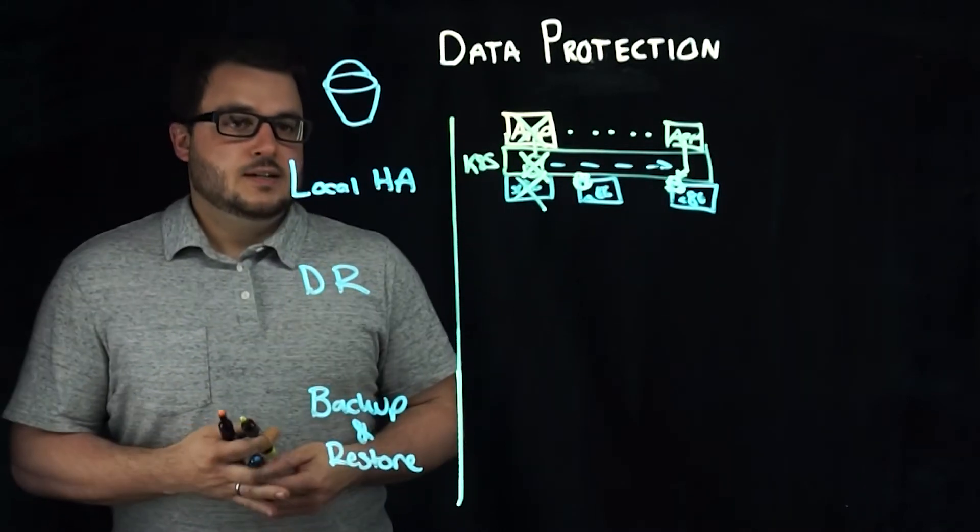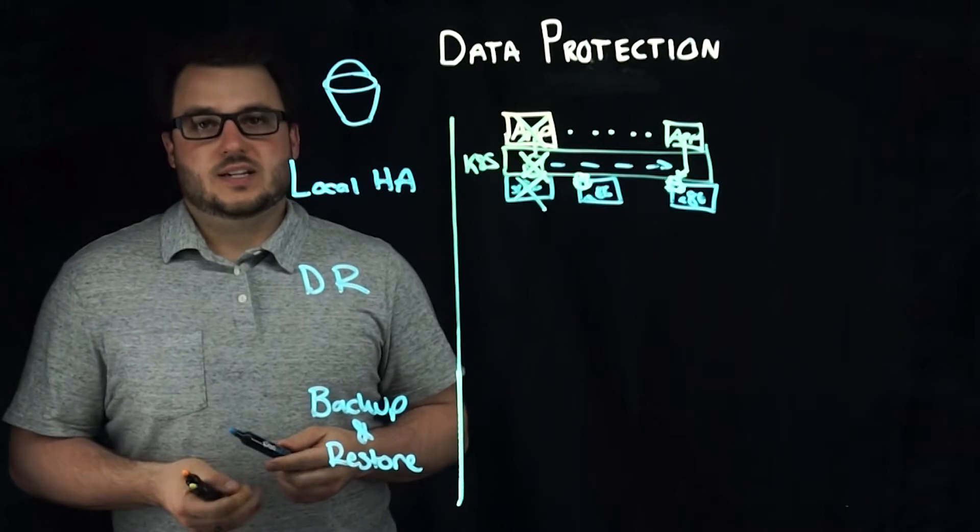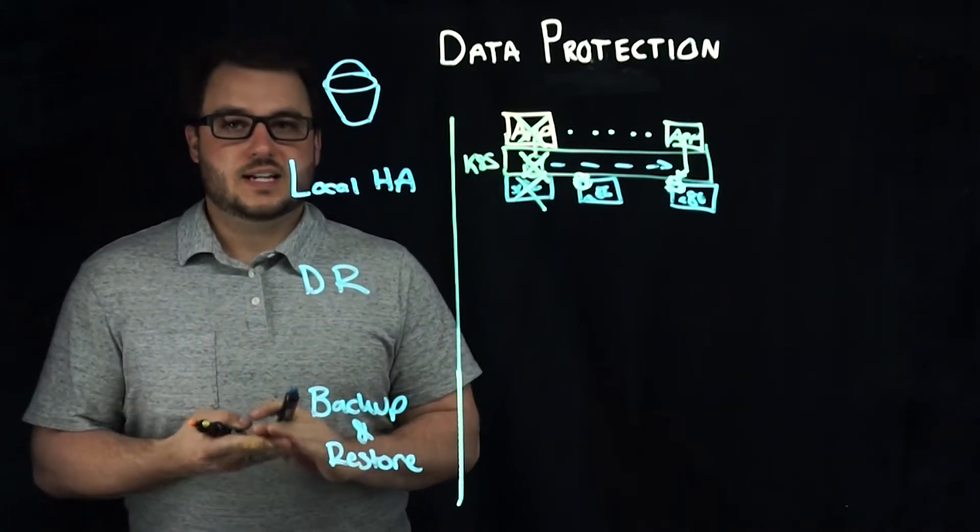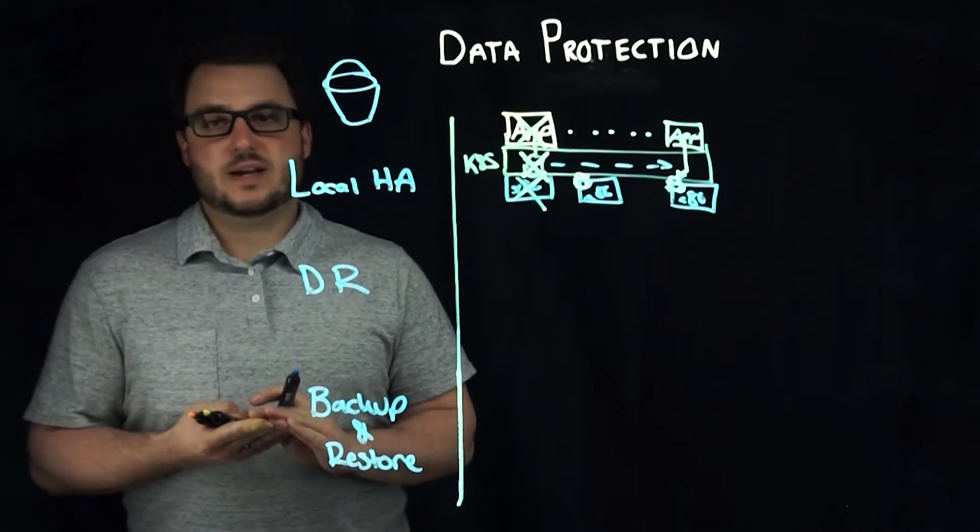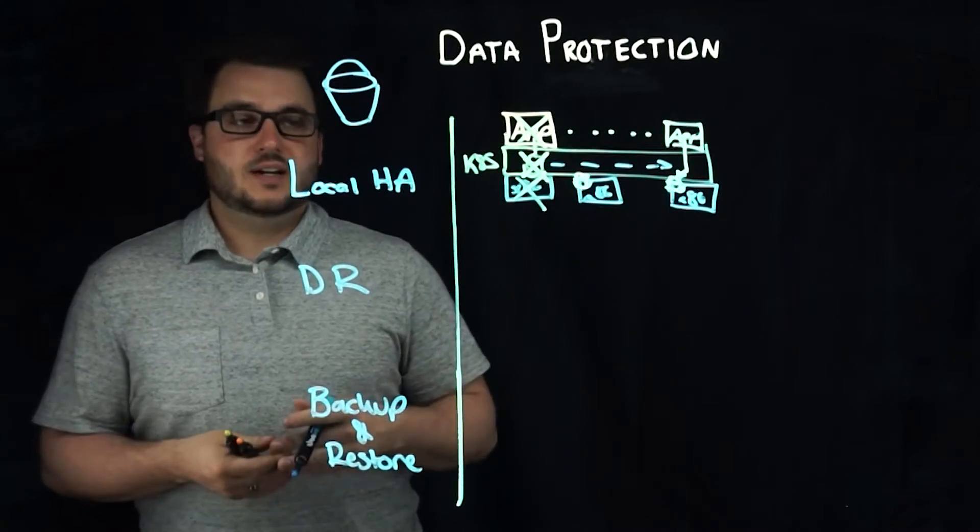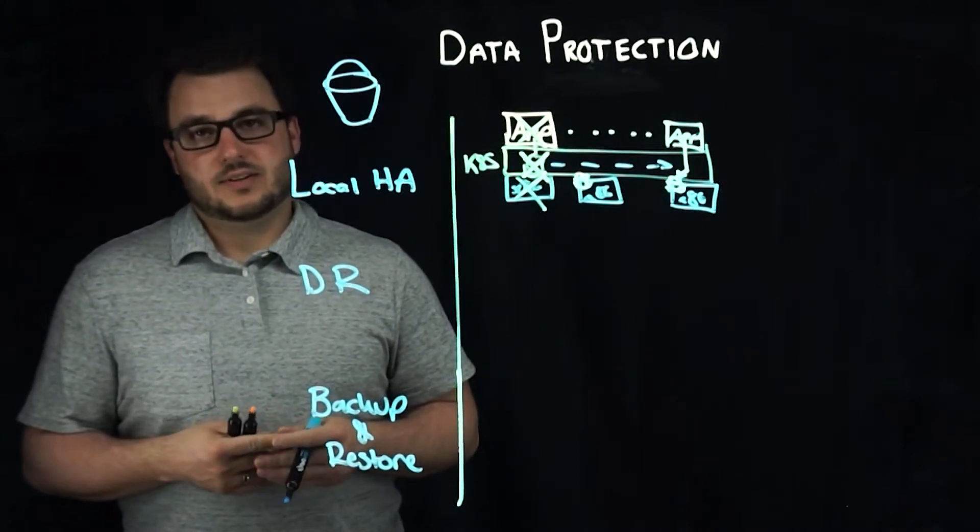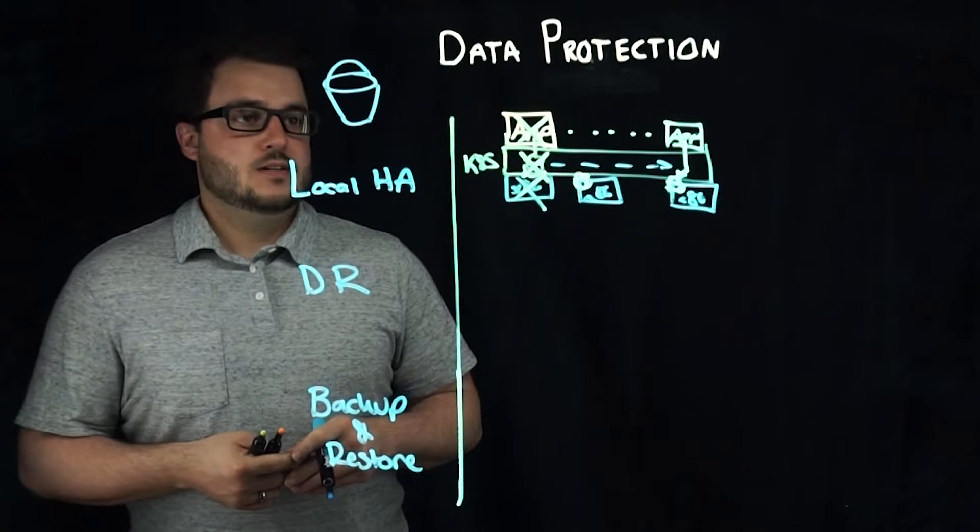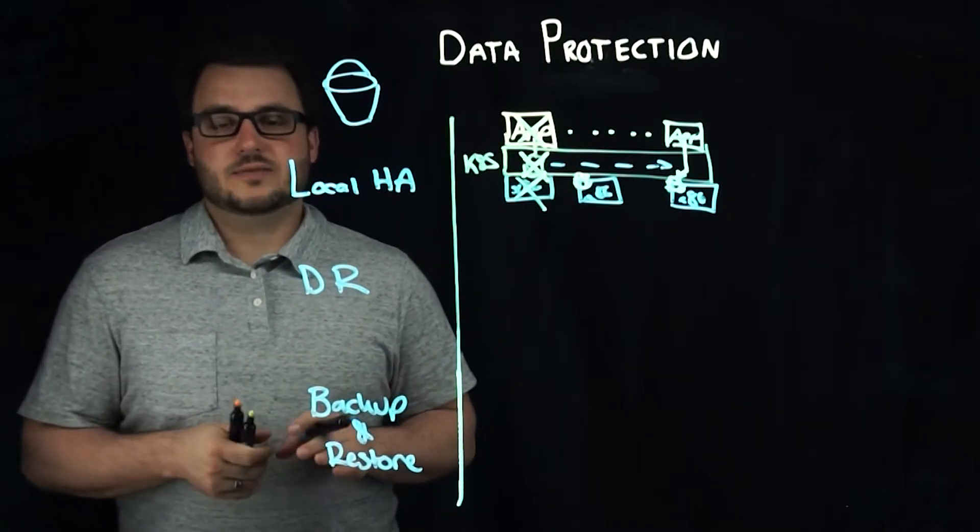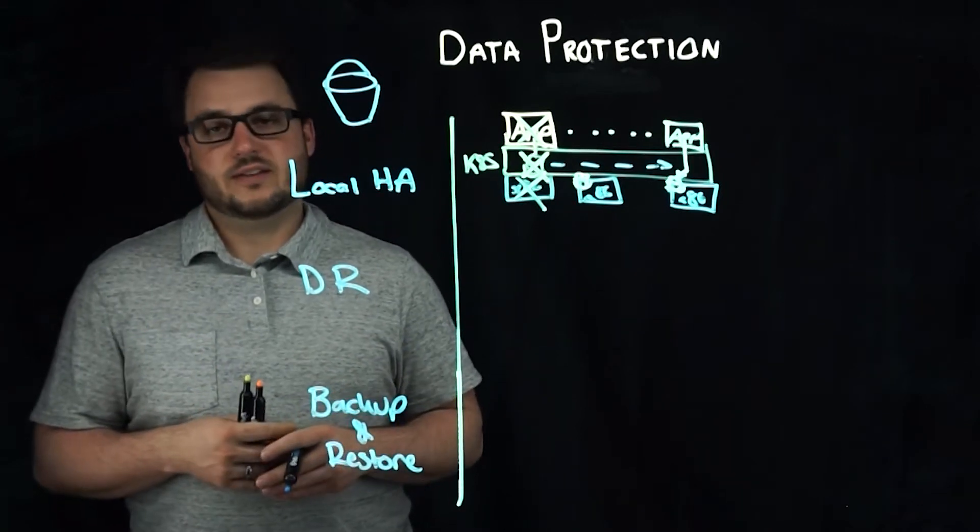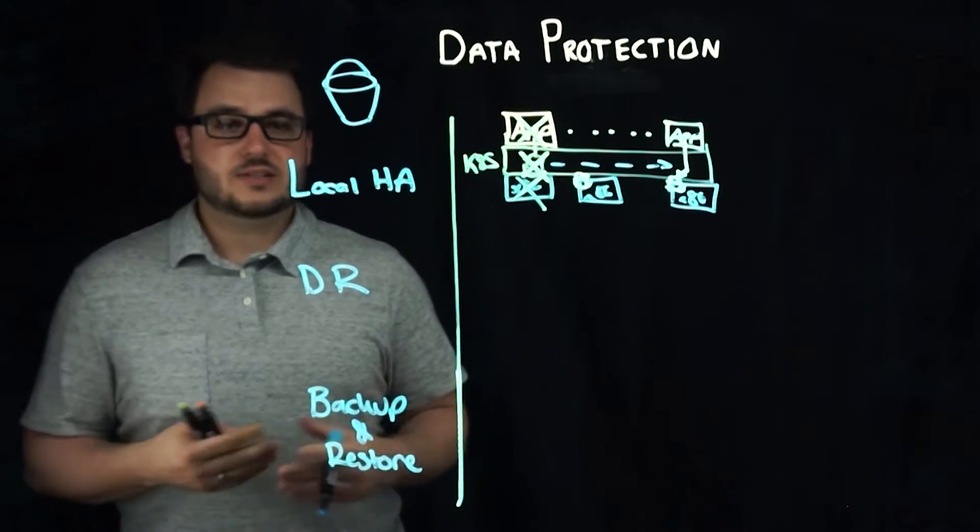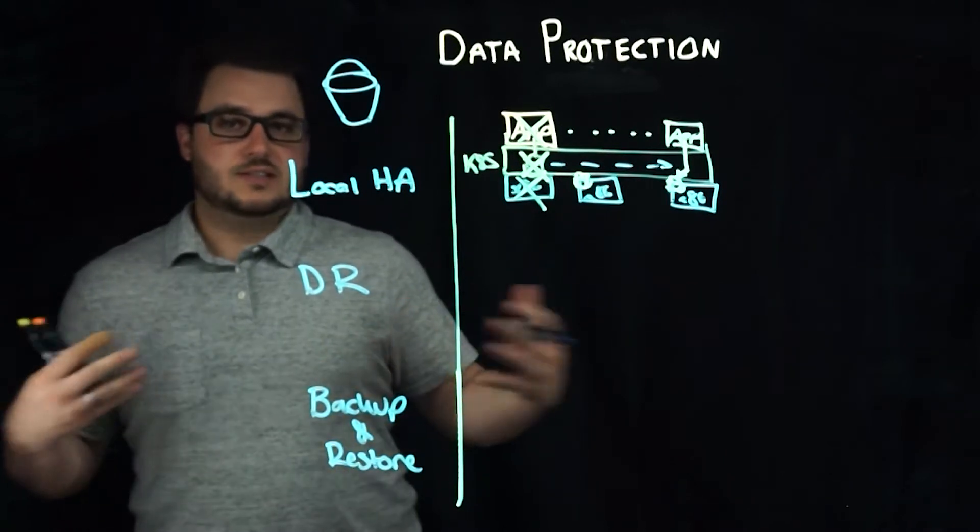In this case, local high availability is really approached by the orchestration layer and the data management layer. In terms of the data management layer, we need replication of the individual volumes and blocks of that volume. That's where Portworx has always been really good at providing local high availability and failover protection for Kubernetes applications by providing replication across the cluster.